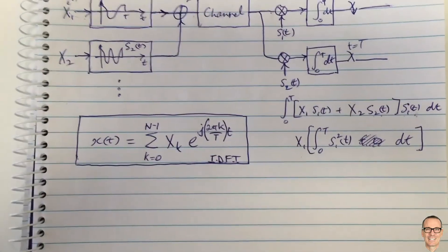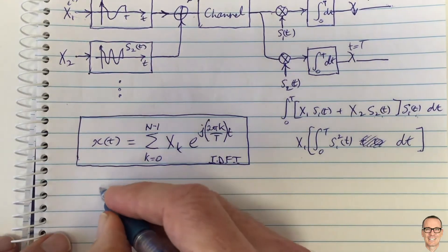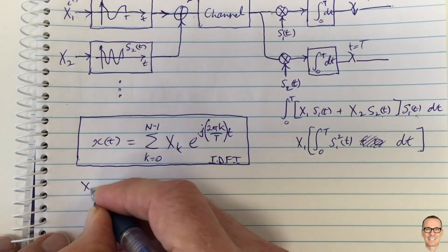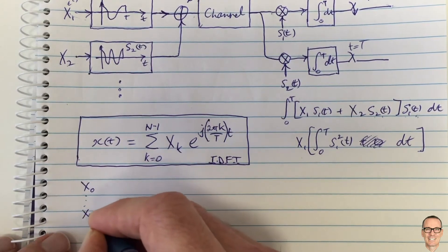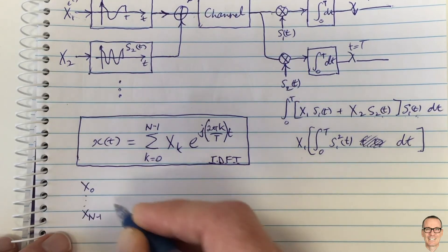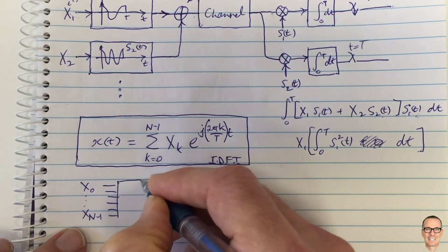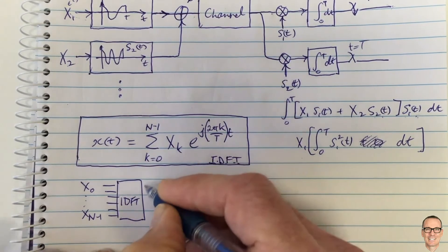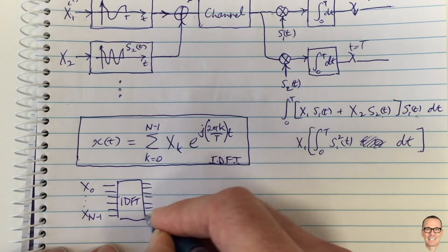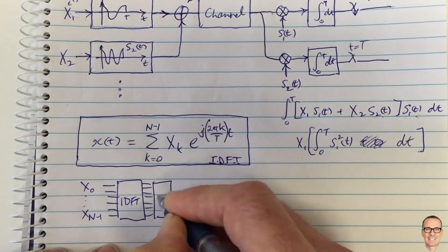An alternate way of implementing this is to have x0 to x(n-1) going into each one of those, going into an inverse discrete Fourier transform, which then goes into a parallel to serial converter.